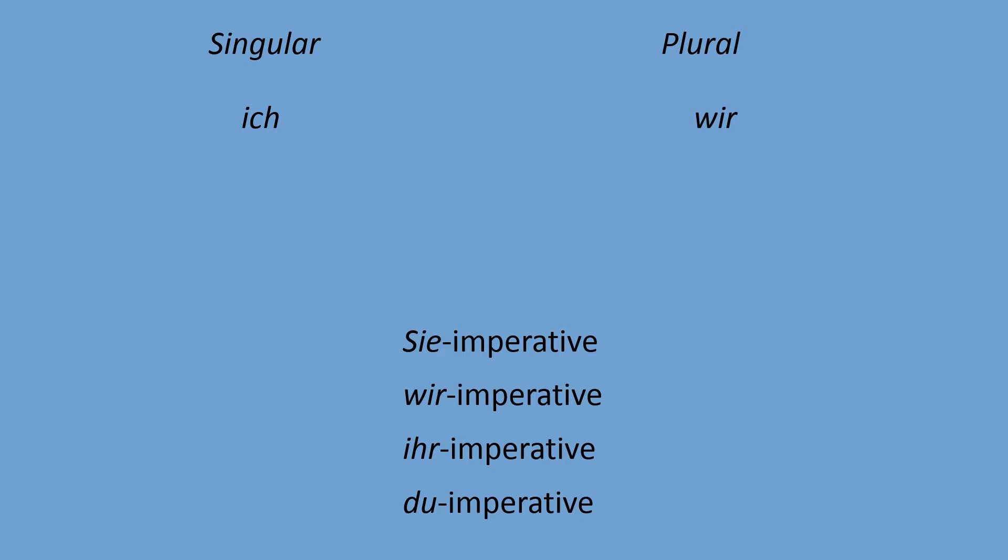The first person plural is 'wir' — many 'me's together. Can we give commands to many of us? Yes — you can say 'guys, let's do it, let's go.' You include yourself in the group and give a command to all members. So we can give commands in the wir-form, and we call it the wir-imperative.